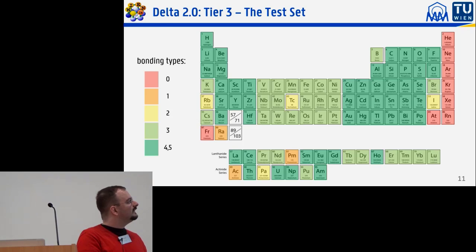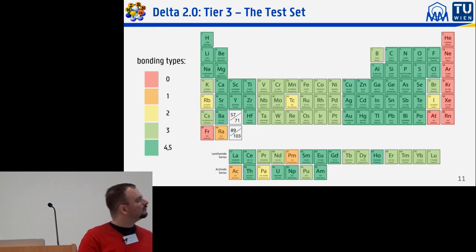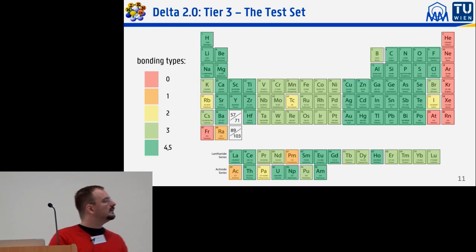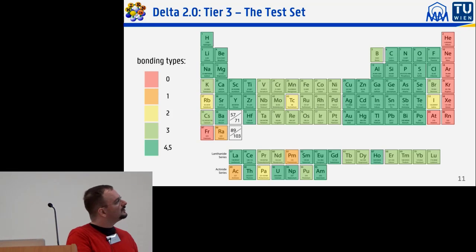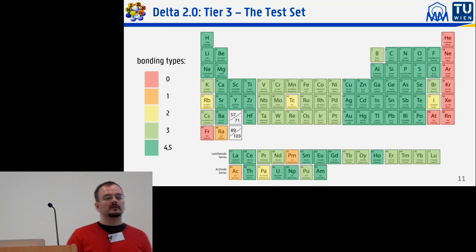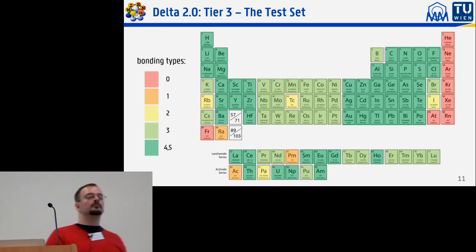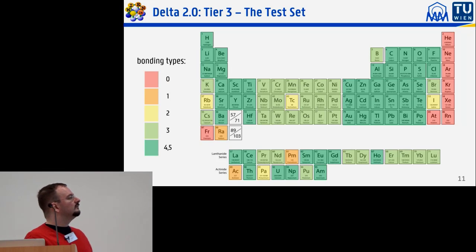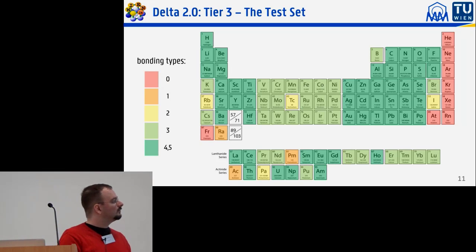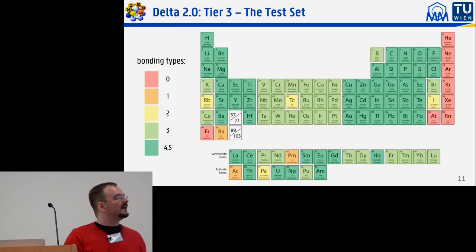I could not find insulating cases for those d-block elements. The darker shade of green marks elements that could be placed into four or even all five bonding categories, which would be the ideal outcome.